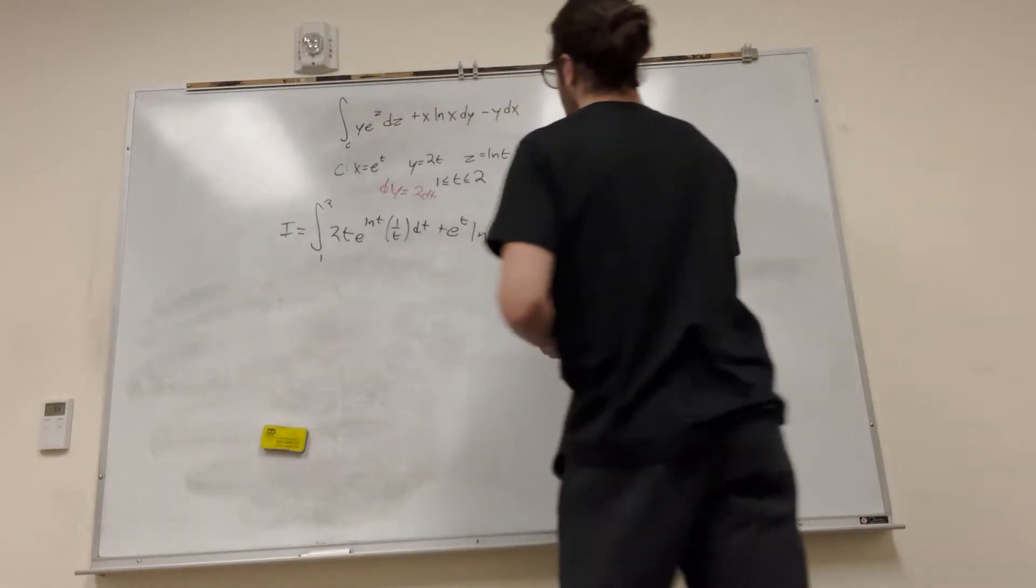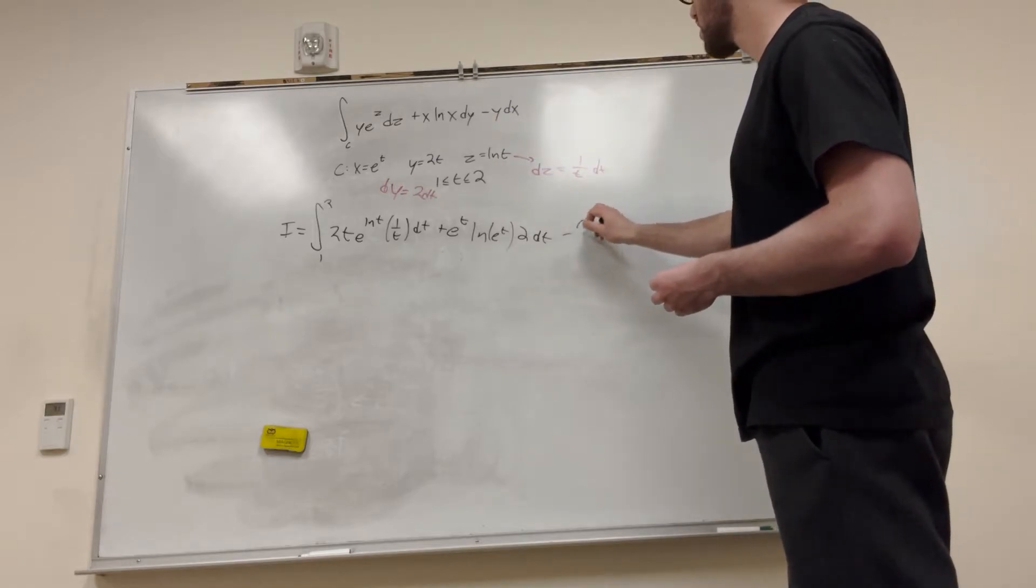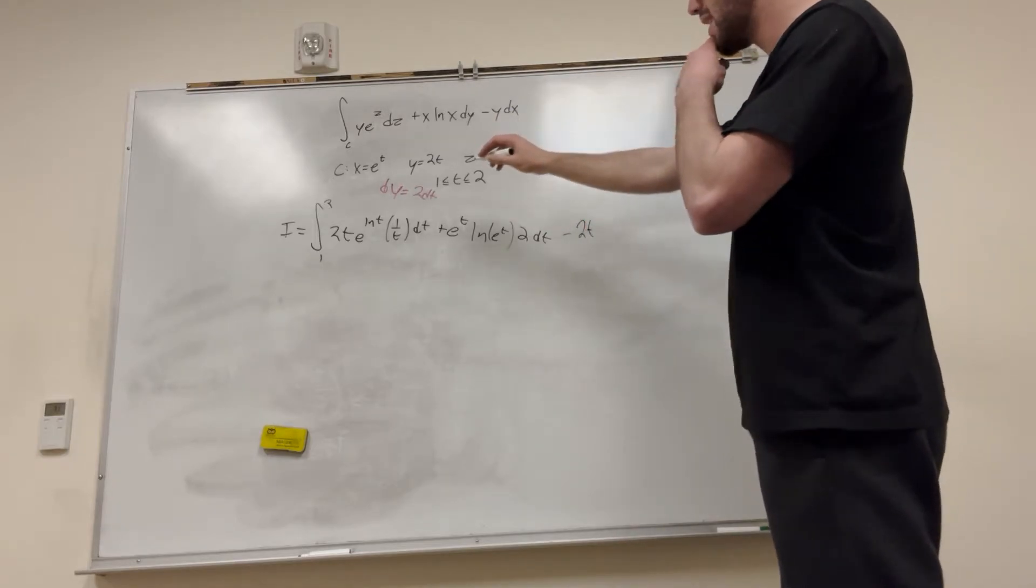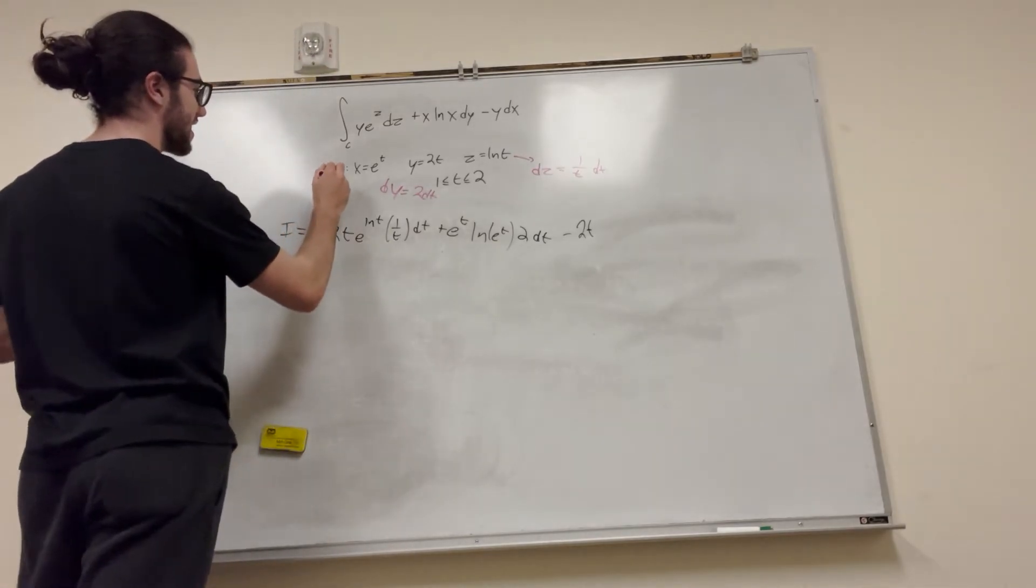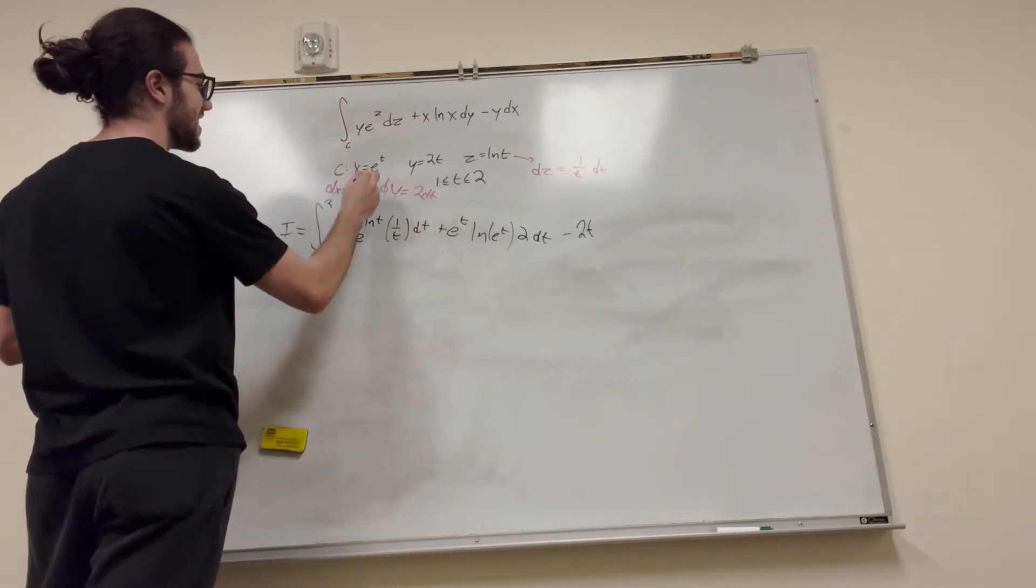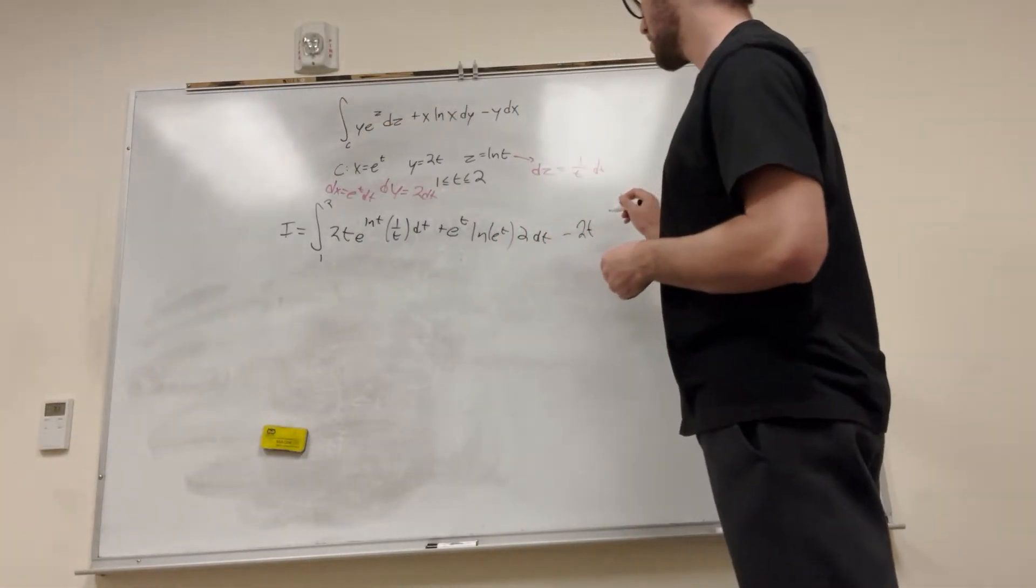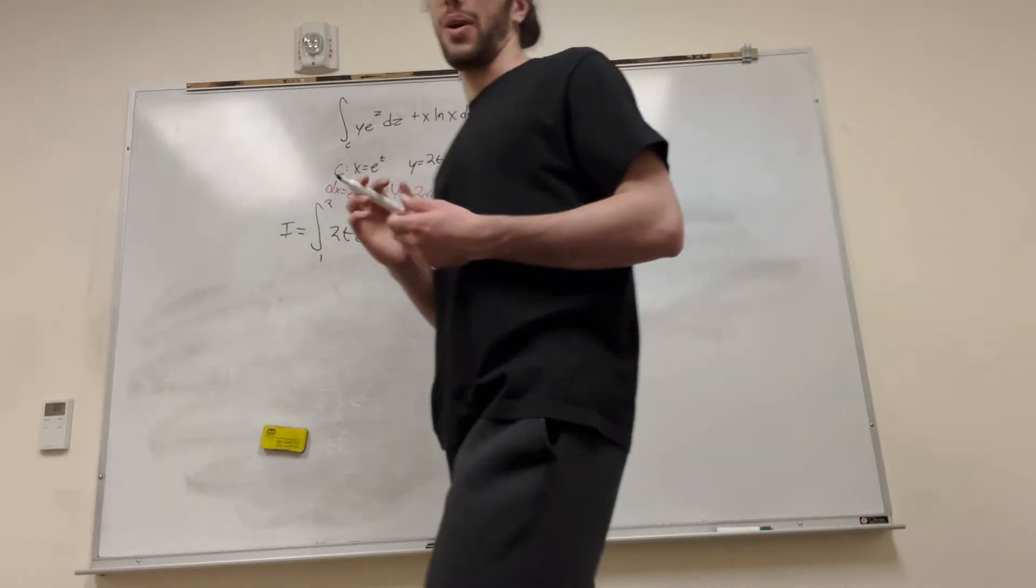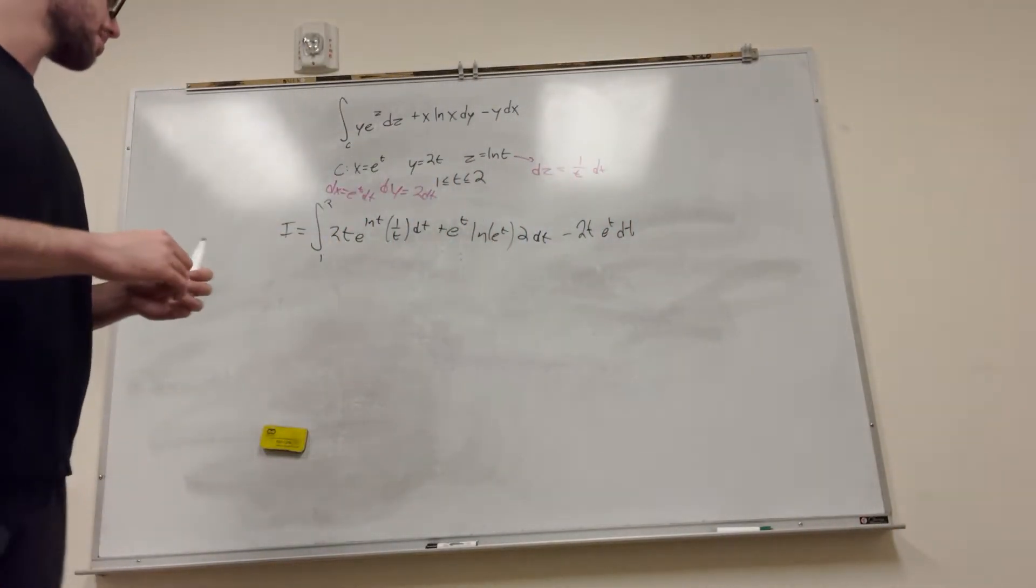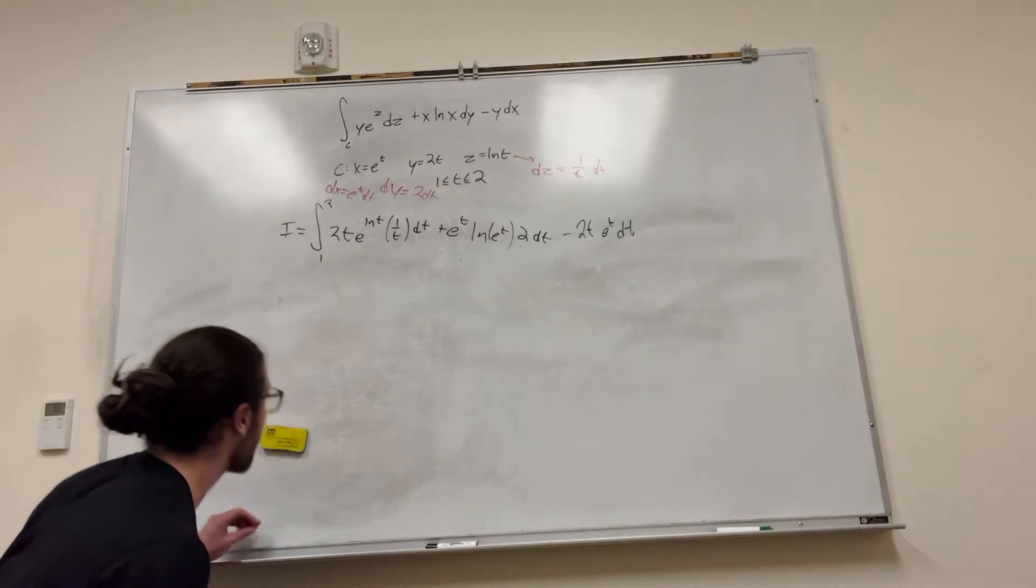And then minus, don't forget the minus, y. So y is 2t. dx. dx. What does that become? Pretty simple. e to the t dt. Alright? Now we have our integral in terms of t. And this is just some kind of, right? But what we've got to do is we've got to simplify it to figure it all out.